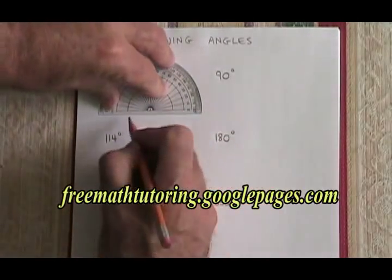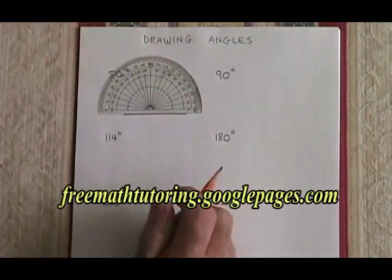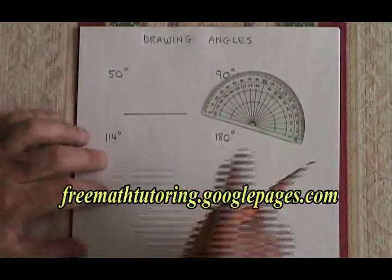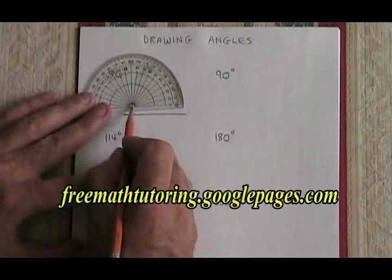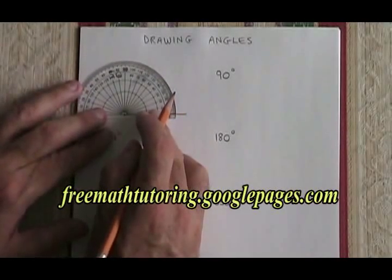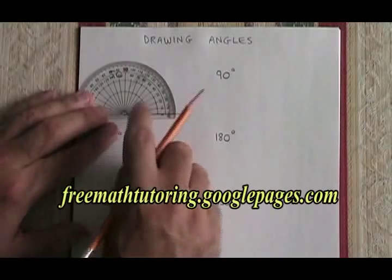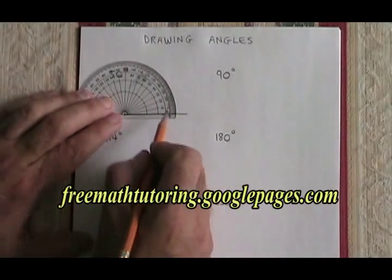I need to start by giving myself a straight line to draw from. Now that I have the straight line, I can zero my protractor using this dot on one end of the straight line that I drew, and then counting up from zero.